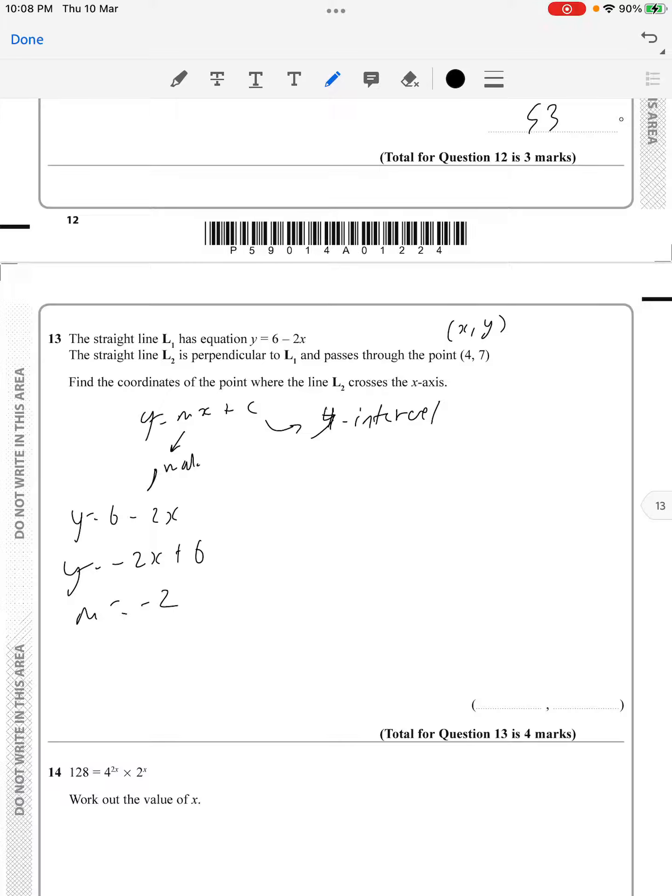gradient and find the opposite reciprocal slope. The opposite reciprocal slope will be positive half. Then we create a new equation with gradient half x plus c. Since l2 is perpendicular to l1, we use the coordinates (4, 7).